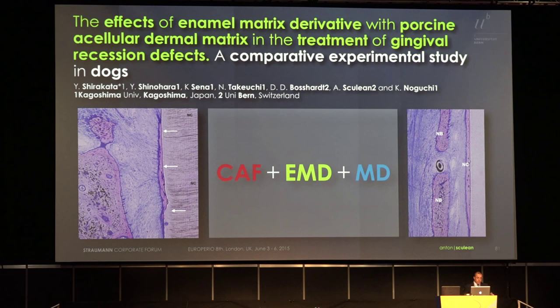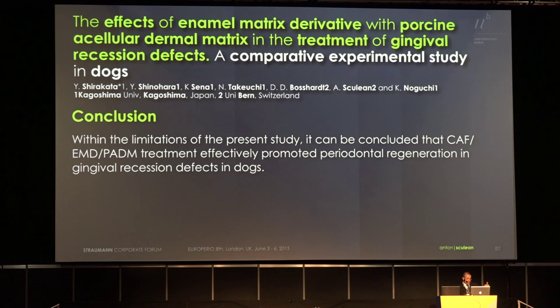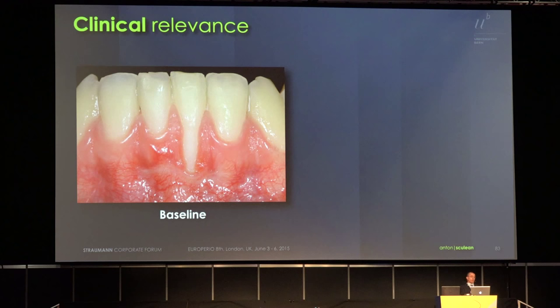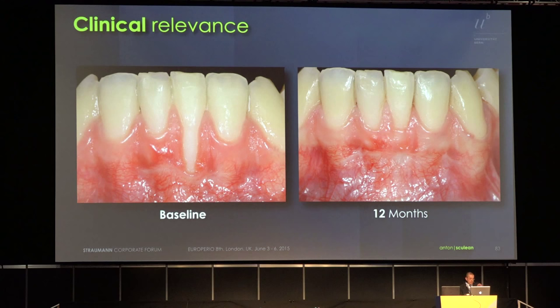We now have cases in the clinic because we tried this in difficult cases. One patient was treated with this combination — the recession was around 7 mm deep. In these cases it is very important to increase tissue thickness, not only to cover the recession but to avoid increased probing depth. The outcome using this technique is a perfect regeneration of the soft tissues, with probing depth of only 1 mm.